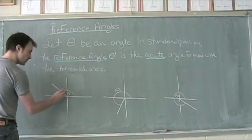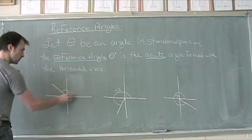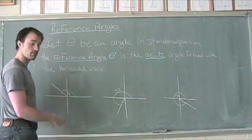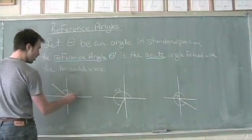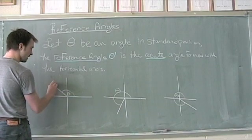we've got a theta that's reaching from our initial side of the positive x-axis all the way around to our terminal side here in quadrant two.